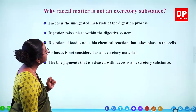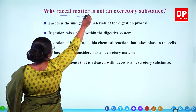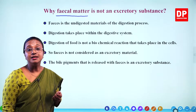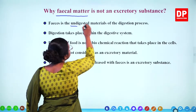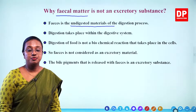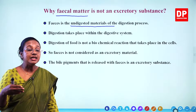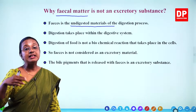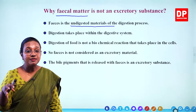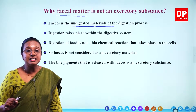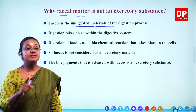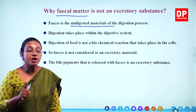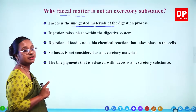Why is faecal matter not an excretory substance? Faecal matter is the undigested materials in the digestive system. It gets collected in the large intestine in the form of faeces, fills up the rectum, and is passed out from the anus. We say passing out of faeces — we do not call it excretion of faeces. Remember, it is not excretion because faeces is not an excretory substance.